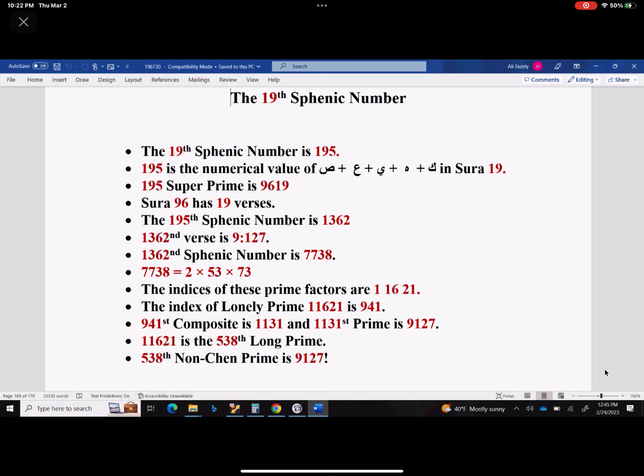Now, 195th sphenic number is 1362. The 1362nd verse is 9:127. Can you believe that? I mean, this is amazing. We didn't get this knowledge three, four weeks ago. We didn't know about this. God gave us this knowledge. 1362nd sphenic number is 7738, and 7738 is 2 times 53 times 73.